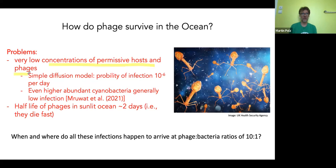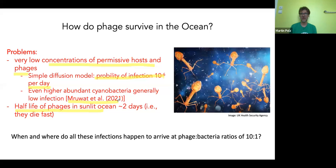I'm tending more and more toward the view that we're overestimating the importance of phage in the ocean. Please take these as back-of-the-envelope calculations meant to illustrate a problem. We have very low concentrations of permissive hosts and phages — on the order of one per mL. Using a simple diffusion model, the probability of infection per day is 10^-5 or so. This is in light of the half-life of phages in the sunlit ocean being about two days due to UV light. Very recently, Debbie Lindell's group from the Technion reached similar conclusions for higher-abundance cyanobacteria — generally very low infection rates in the wild.